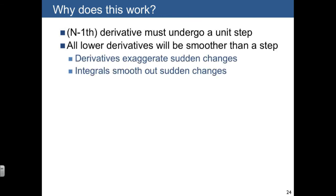The rule is that if you have one quantity that's undergoing a unit step, all lower derivatives—in other words all integrals of that quantity—have to be smoother than a step. If you integrate those over a time between 0 minus and 0 plus, you get no change. Generally, the more derivatives you take, the more you exaggerate sudden changes, and the more integrals you take, the more you smooth out sudden changes.